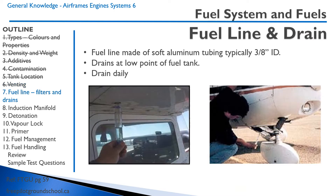Fuel lines are typically made of soft, 1100-grade aluminum tubing, typically 3/8ths inch inside diameter. There are also fuel drains at the low point in the fuel tank — you'll see one under the wing on a high-wing Cessna, and usually one right by the fuel bowl, a fuel strainer, in the engine just before the carburetor.